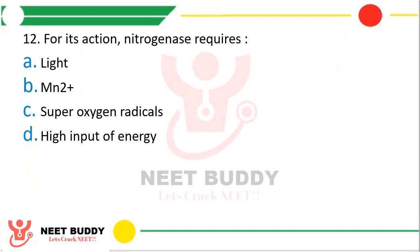Question 12: For its action, nitrogenase requires light, Mn2+, super oxygen radicals, or high input of energy. The correct answer is Option D — high input of energy.